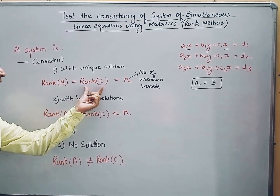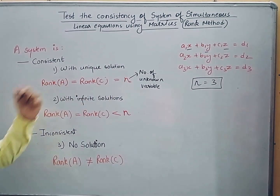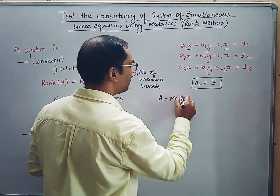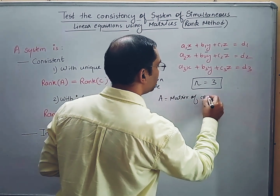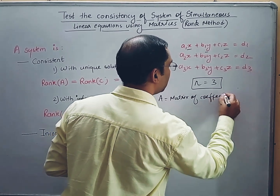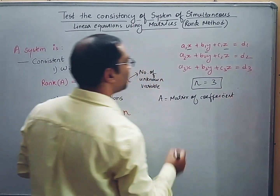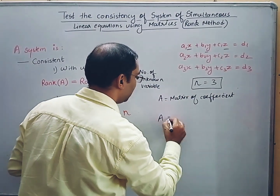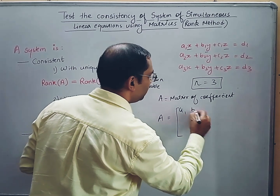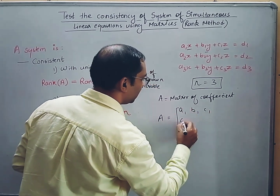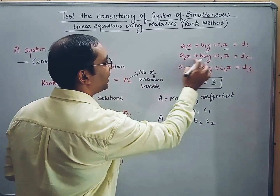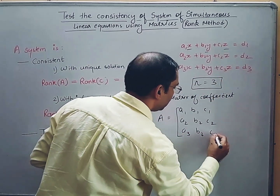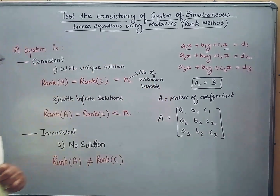Now, what is matrix A and what is matrix C? Matrix A is the matrix of coefficients. We use all the coefficients on the left-hand side to frame the matrix. So matrix A would have A1, B1, C1 in the first row; A2, B2, C2 in the second row; and A3, B3, C3 in the third row. This is matrix A.